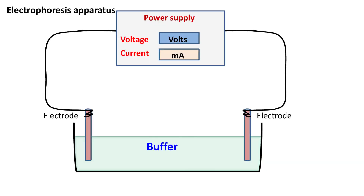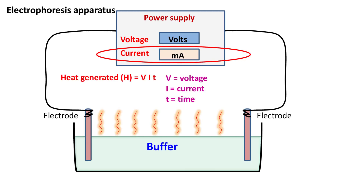Besides voltage and electric field, the other important parameter to be considered while carrying out electrophoresis is the current. The current is measured in milliamps. The measurement of current and voltage is important because the heat generated during electrophoresis depends on the current, voltage, and the total time for which electrophoresis is carried out. Mathematically, this is expressed as H = VIT, where H is the heat, V is the voltage across the electrodes, I is the current, and T is the time for which electrophoresis is carried out.